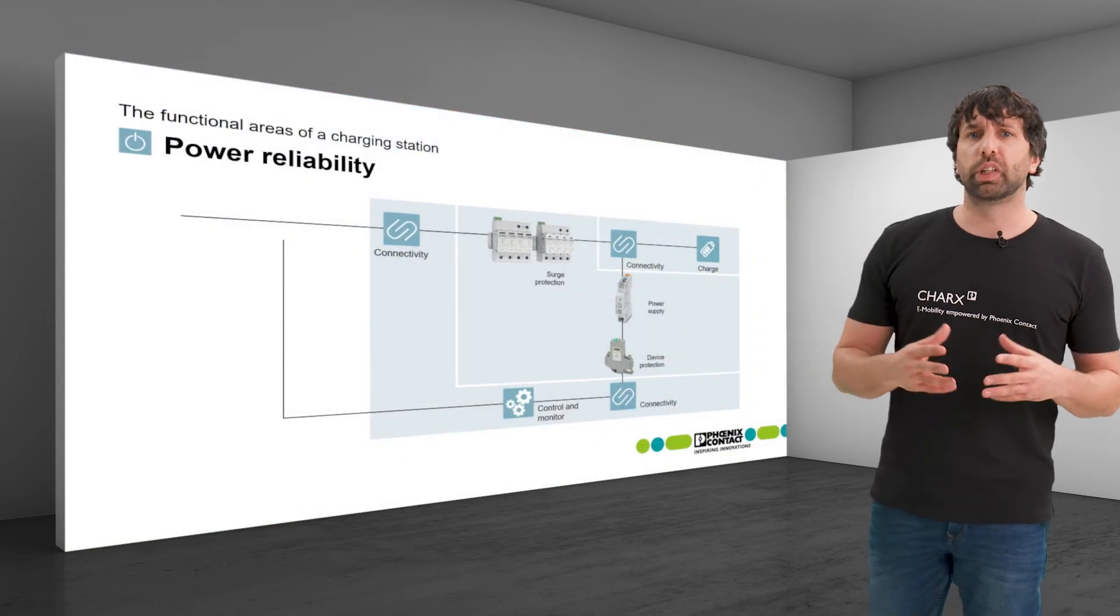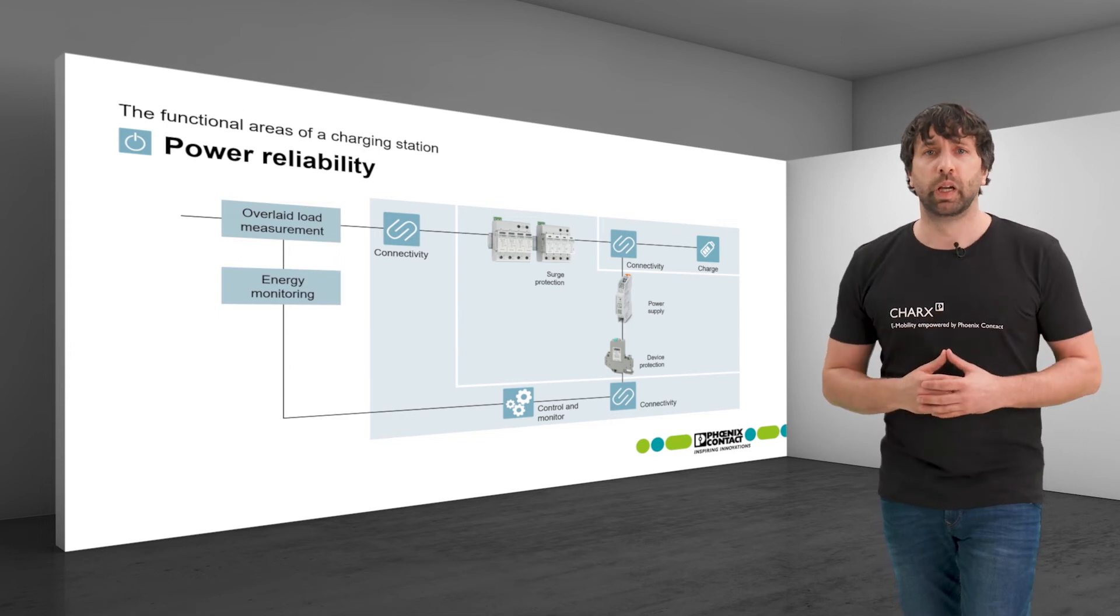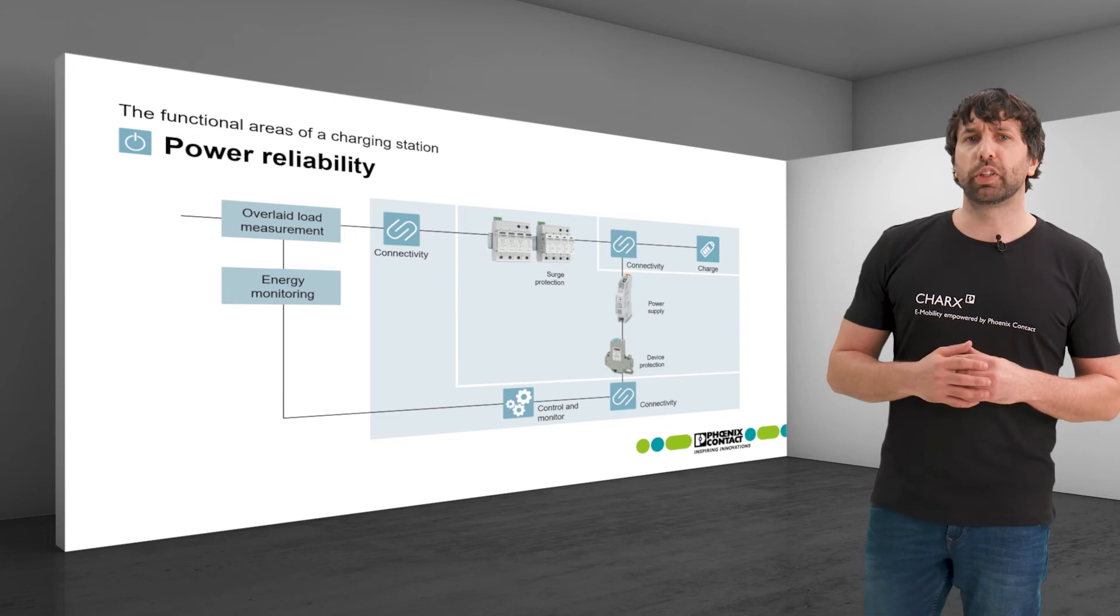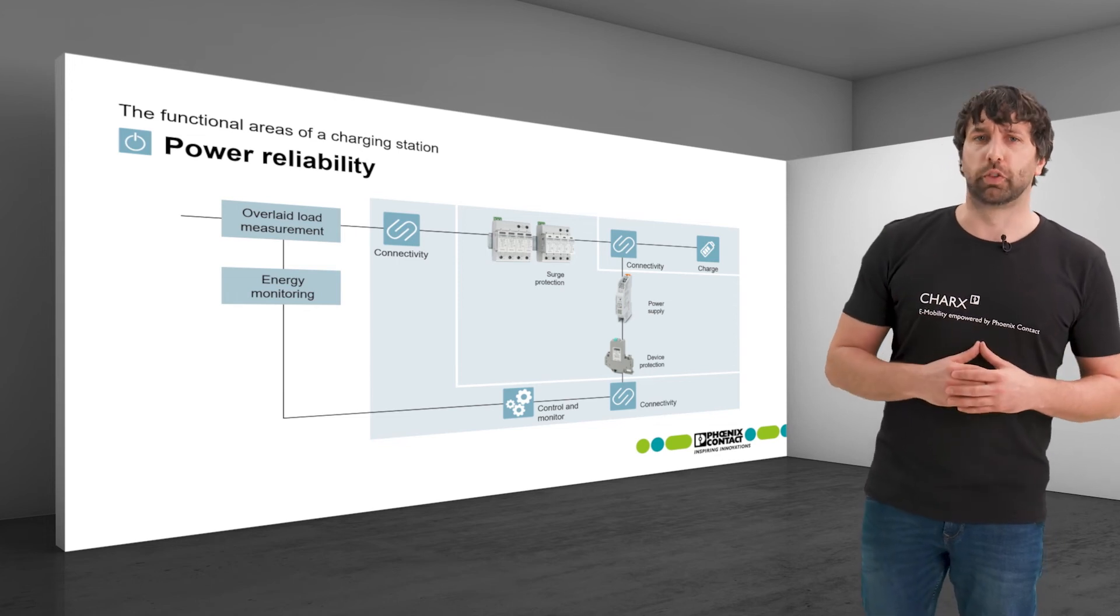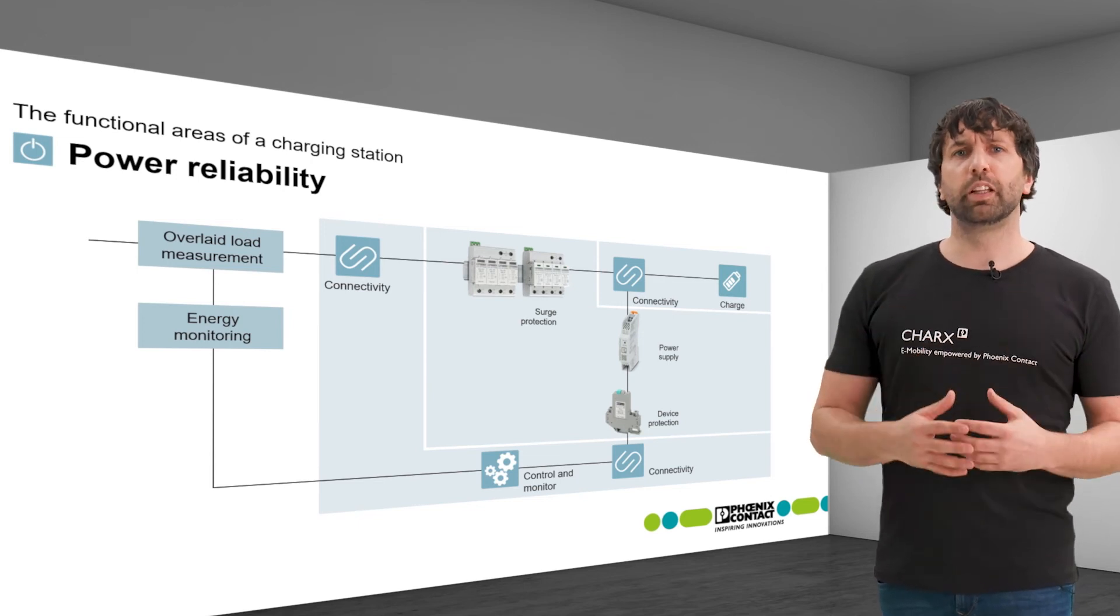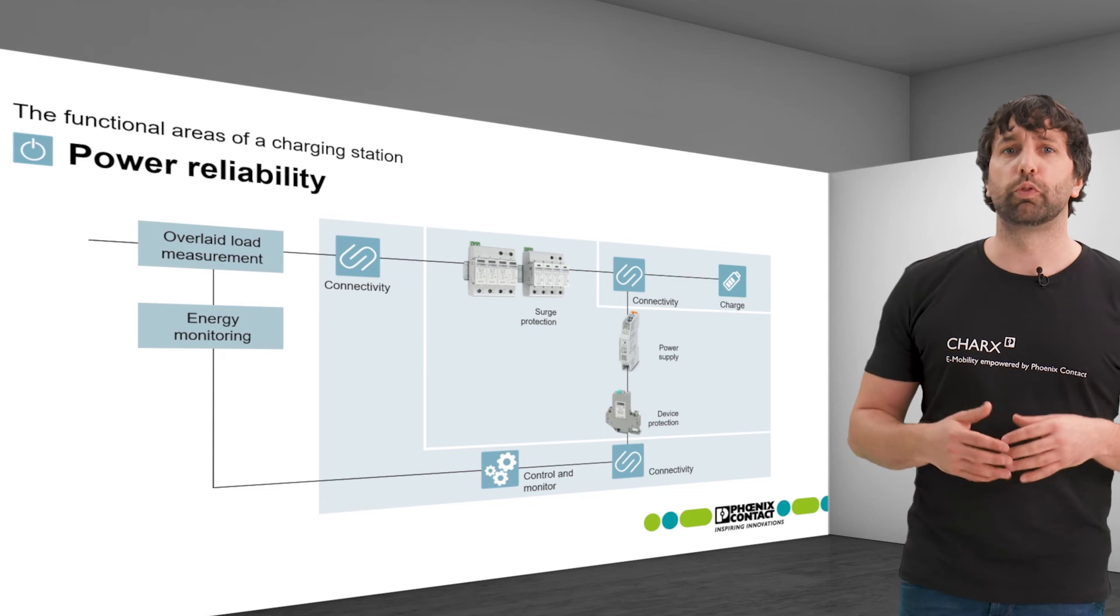With an optional energy monitoring of three phase grid, the load on a circuit can be measured. The higher level controller in a charging park uses the measured data to conduct the load management. This ensures optimal usage of the available connected power and at the same time protects the grid connection from overload.